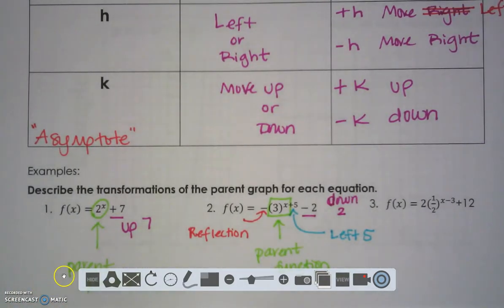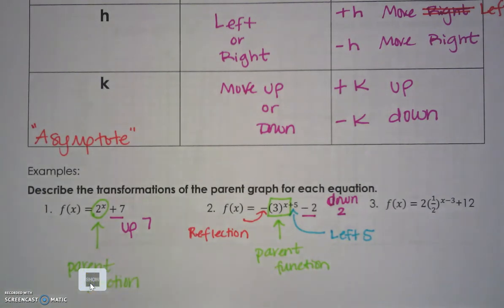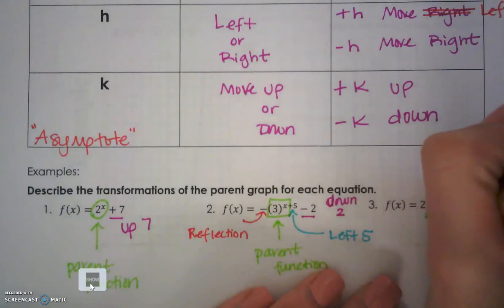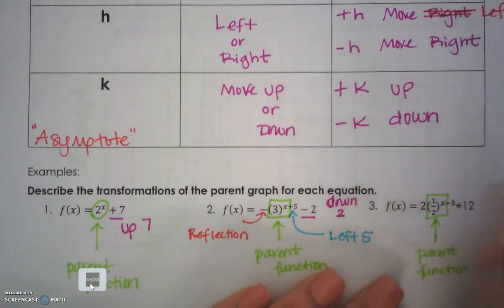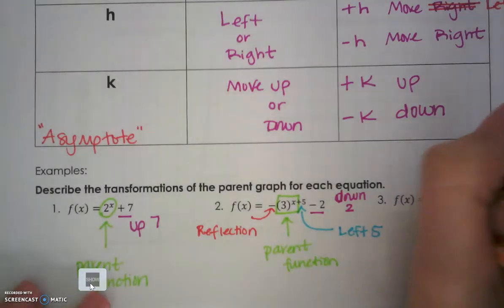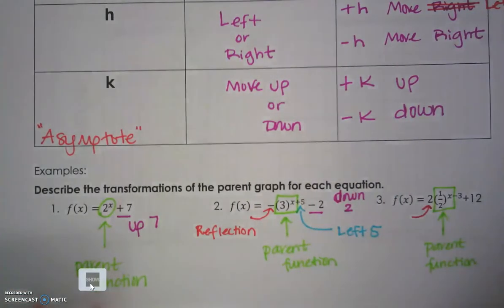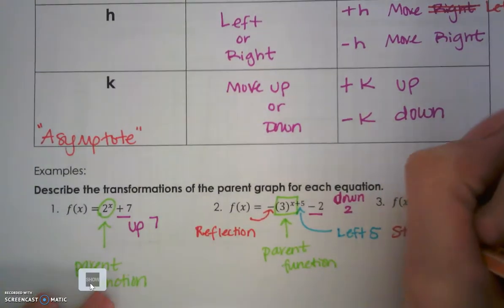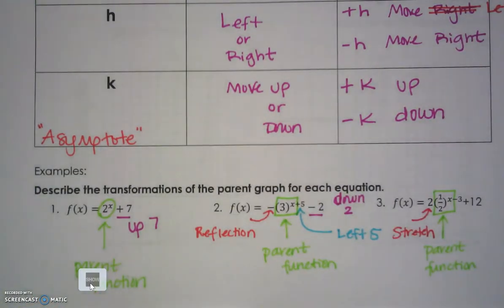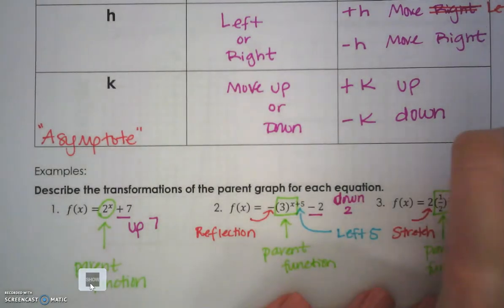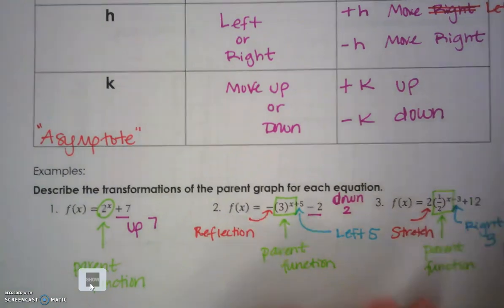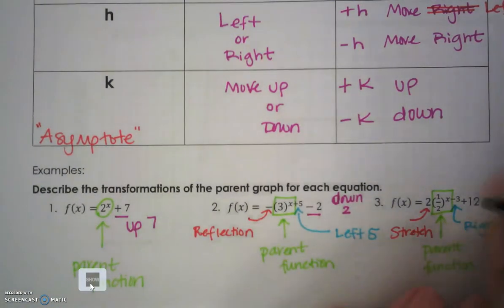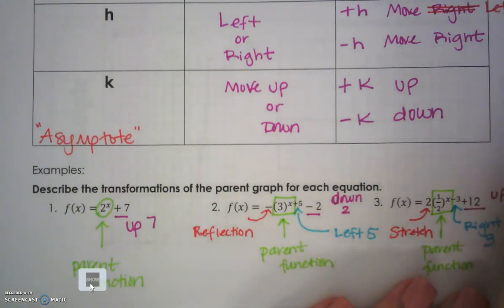Our last one, we have a parent function of 1 half raised to the X. Now in the A spot, we have a 2. That 2 is a stretch because it's bigger than 1. This minus 3 is headed to the right because it's by X and we do the opposite. And the 12 is up 12 since it's positive.